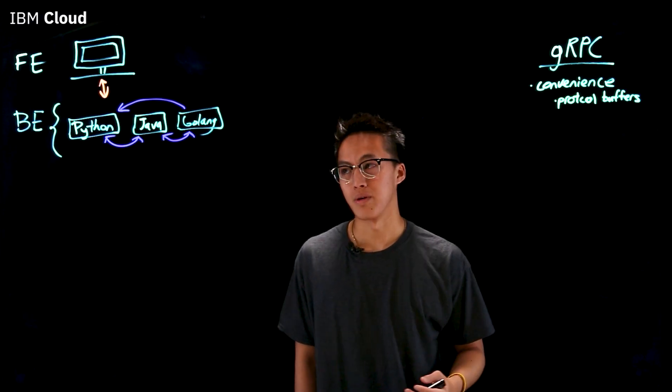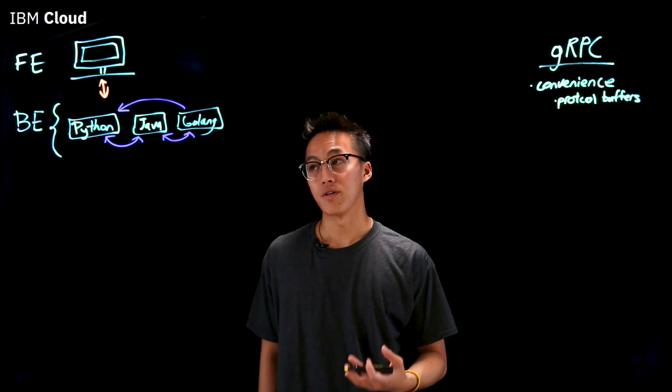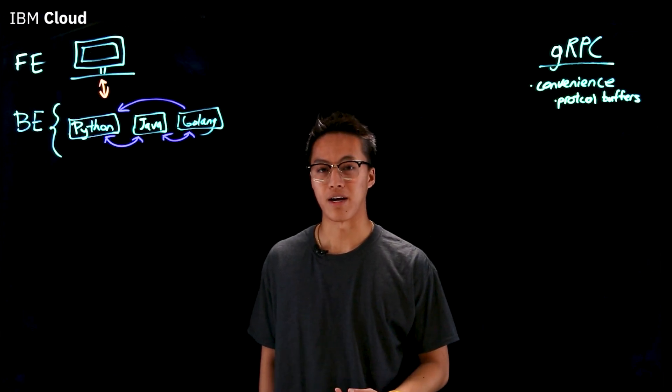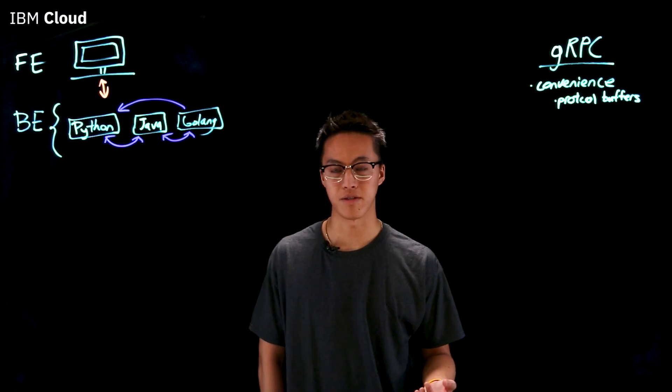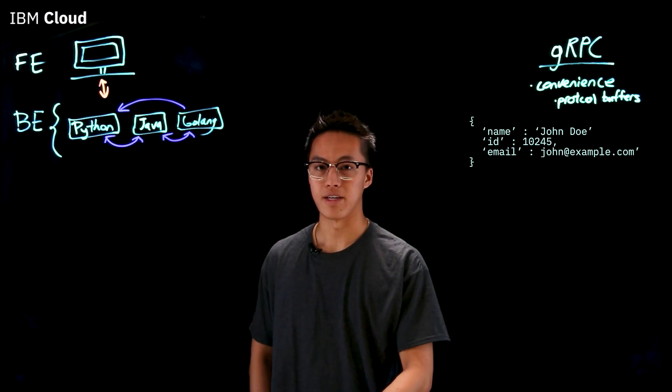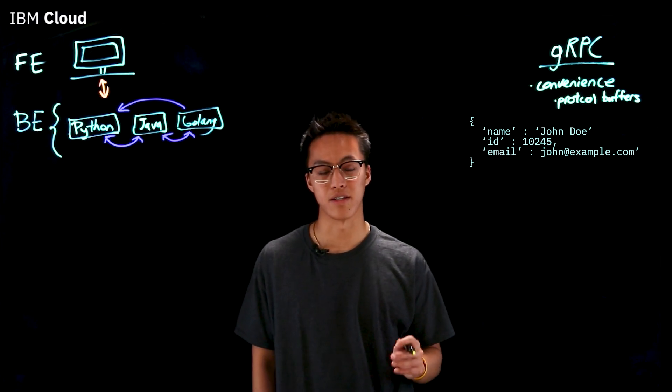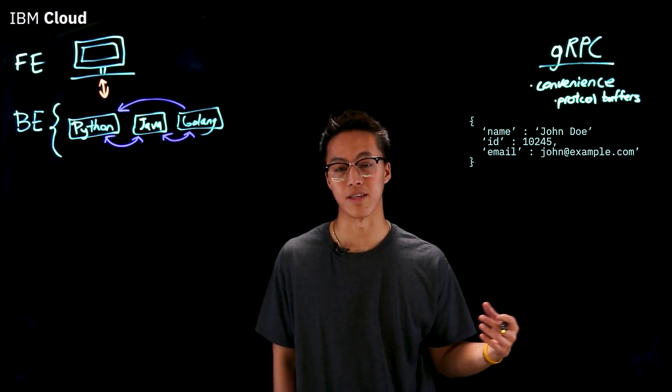So traditionally with an API, you don't necessarily have an API contract that is defined by the protocol itself. So if we're using REST for example, you're just sending JSON messages with key value pairs that aren't checked until you get to the receiving end and that's where it handles it.